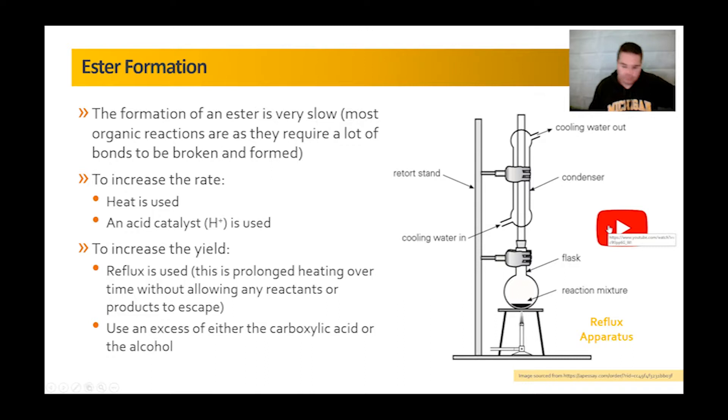Now I talked about the fact that esters have the ability to form some stronger bonds with each other due to that carbonyl group, but they can't form hydrogen bonds. Now what that means is that the ester has a higher boiling point than similar alkanes, but lower boiling point than similar alcohols or carboxylic acids. So I've got four molecules here. You can see we've got pentane which is an alkane with molecular weight of 72, butanol so a primary alcohol, we've got a carboxylic acid, and then we've got an ester which has a similar molecular weight. And you can see here the boiling point of the alkane is much lower than the ester here, but the ester is lower than the alcohol and the carboxylic acid because you can't form those secondary hydrogen bonds. They're insoluble in water again because you generally have a long hydrocarbon chain which is non-polar.